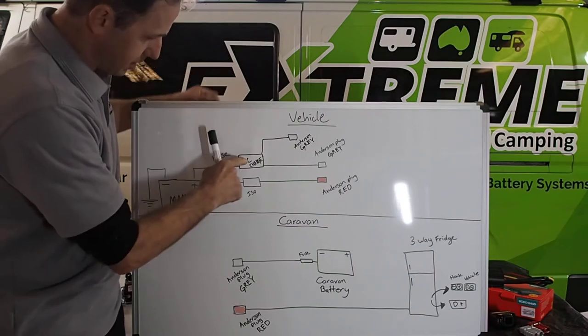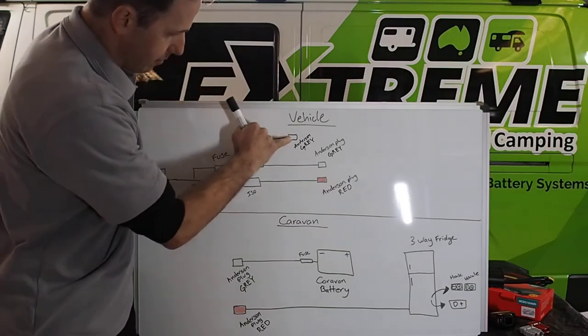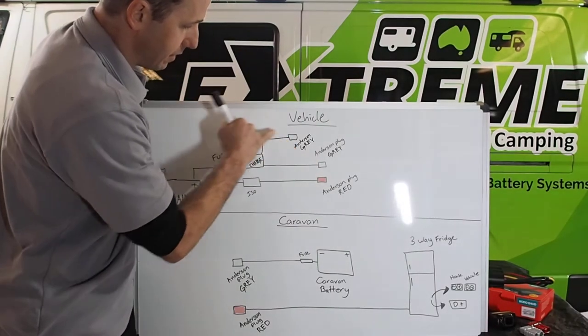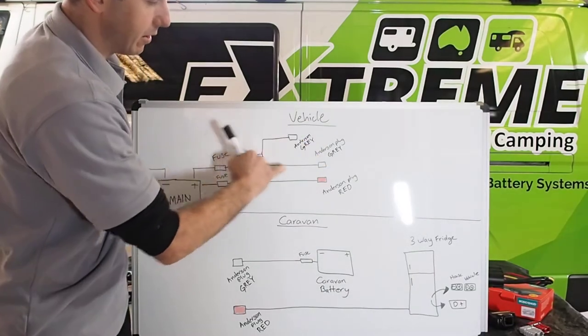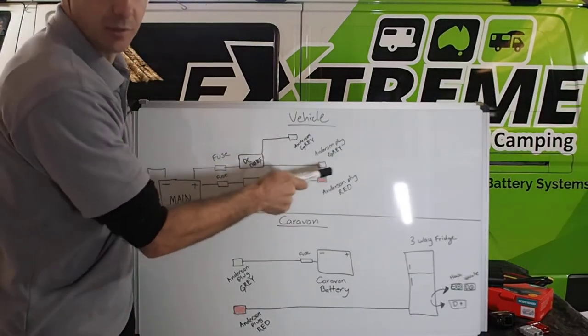Main battery comes into the DC charger. There's another Anderson plug there and there's another Anderson plug there. They're the same. They're on the same line. So, one input, two outputs.